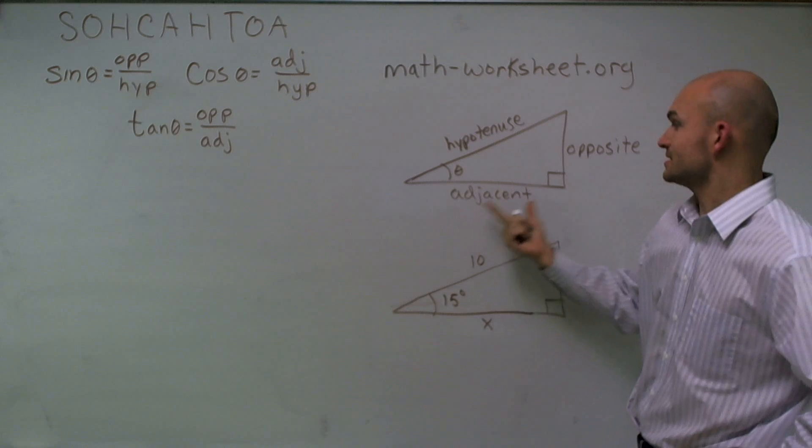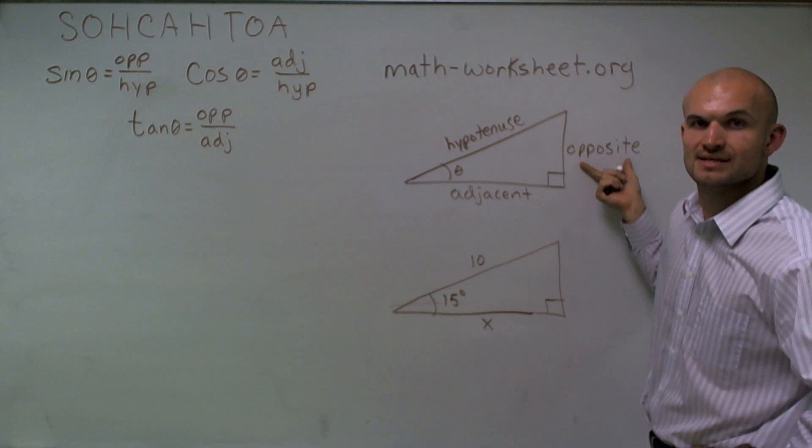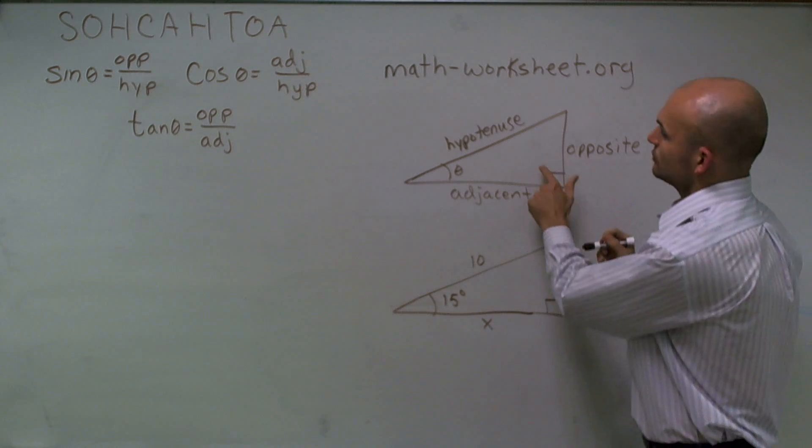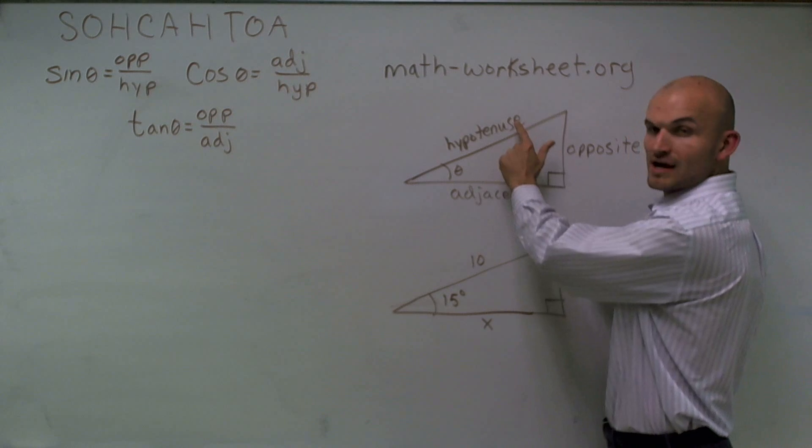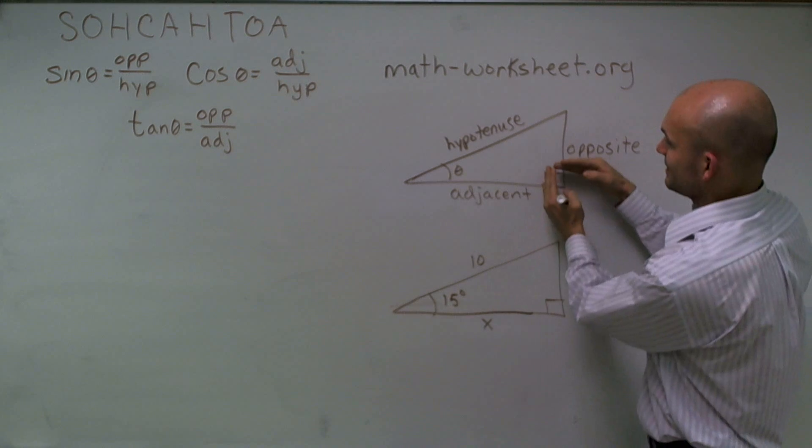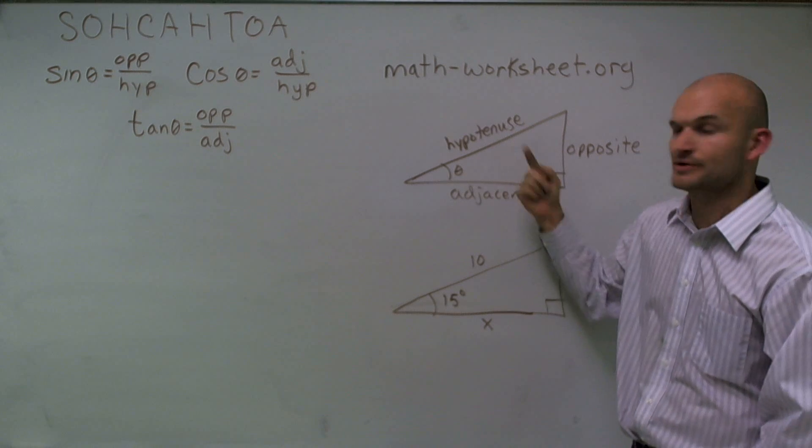One is what we call adjacent, and one is what we're going to call the opposite side. I'll get to why we call those those in just a second. The side length that's directly across from your 90-degree angle, a lot of times we say that the 90-degree angle points towards it, is what we call our hypotenuse.